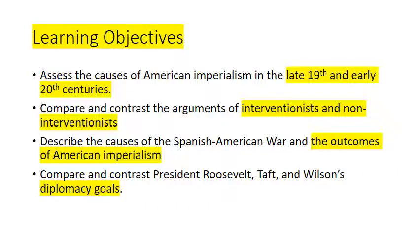Learning Objectives: Assess the causes of American imperialism in the late 19th and early 20th century. Compare and contrast the arguments of interventionists and non-interventionists. Describe the causes of the Spanish-American War and the outcomes of American imperialism. Compare and contrast President Roosevelt, President Taft, and President Wilson's diplomacy goals.